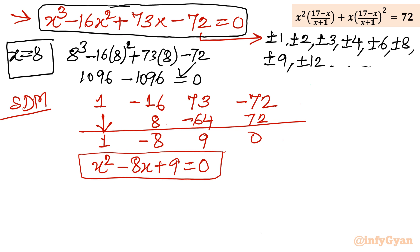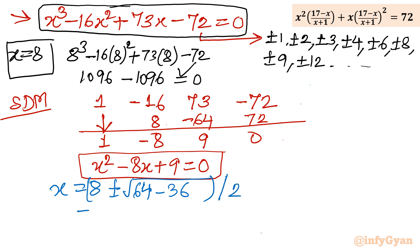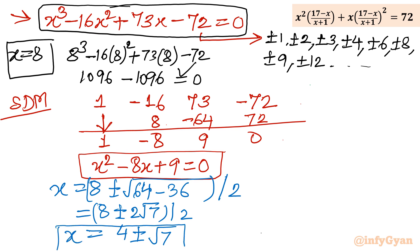Solving x² minus 8x plus 9 equals 0 using the Sridharacharya formula: x equals (8 plus or minus √(64 minus 36)) over 2 equals (8 plus or minus √28) over 2 equals (8 plus or minus 2√7) over 2, giving x equals 4 plus or minus √7. So the four solutions are x equals 1, x equals 8, and x equals 4 plus or minus √7.